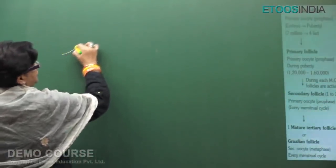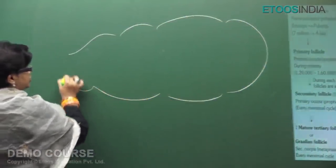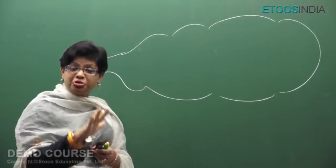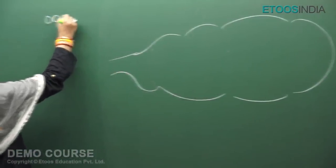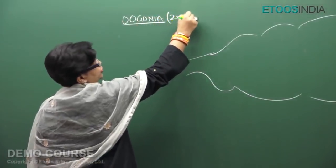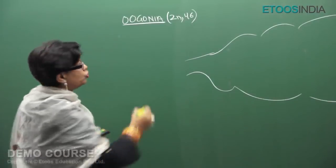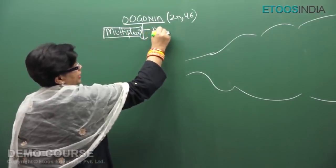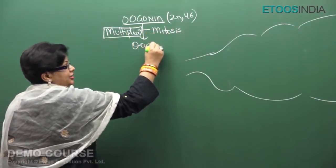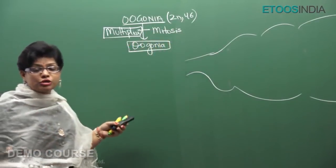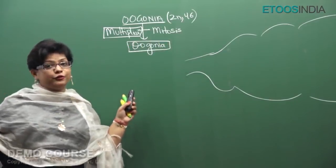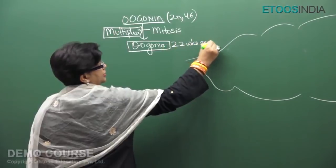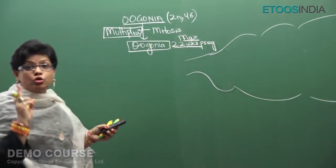In the ovary of the baby girl, there are many oogonia — this is all happening before birth in the mother's uterus. These oogonia, like spermatogonia, are diploid with 46 chromosomes and keep multiplying to form more oogonia. This is the same multiplication phase as in spermatogenesis. However, in females, maximum oogonia are formed by 22 weeks of pregnancy — no more oogonia are formed after this.